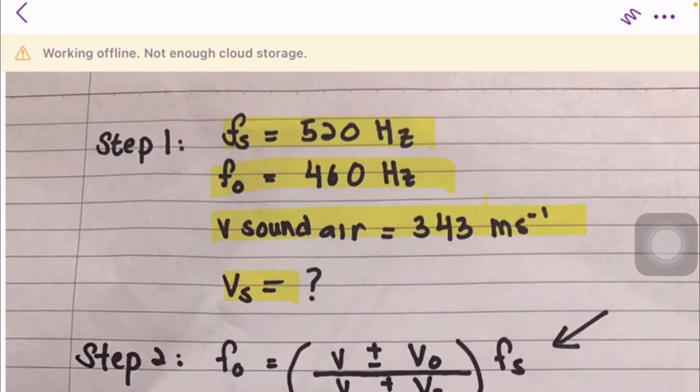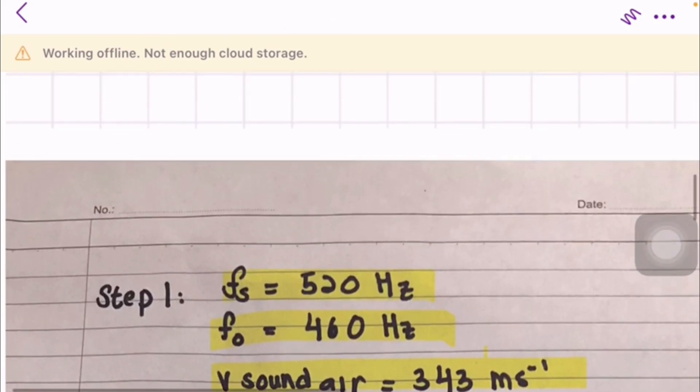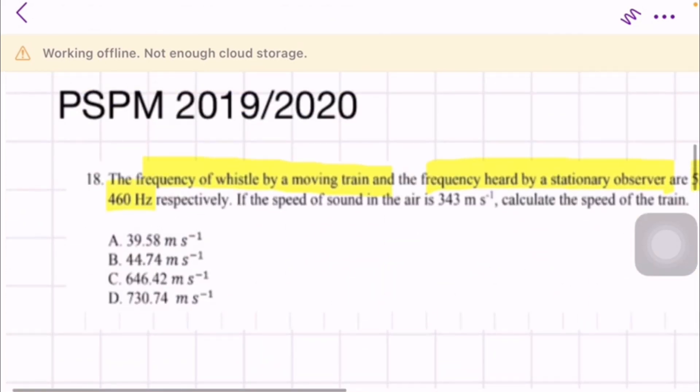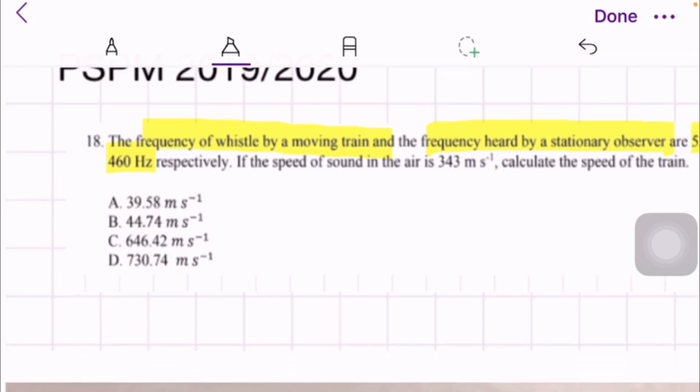We know fs is 520 because the frequency of whistle is from the moving train. Moving train means whatever is producing the sound is the source.